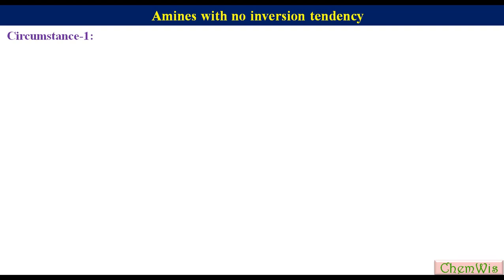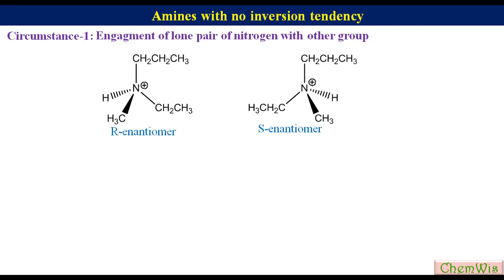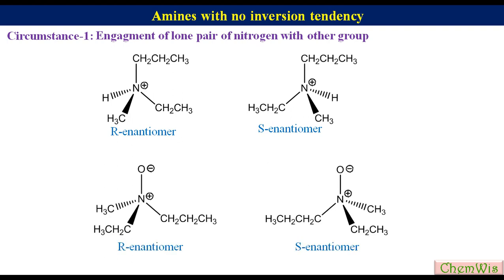Circumstance 1: Engagement of the lone pair of nitrogen with another group. The main culprit of amine inversion is the lone pair on the nitrogen. If this lone pair is engaged with some other group to form tetravalent nitrogen, amine inversion can be prevented. Examples include chiral quaternary amines like ethylmethylpropyl ammonium cation, and chiral N-oxides like ethylmethylpropyl amine oxide — both have isolable R and S enantiomers.